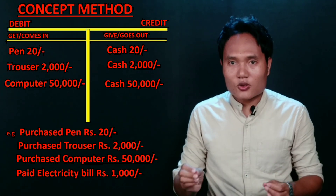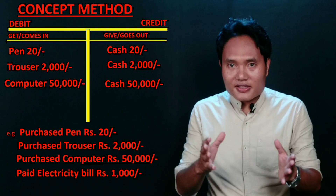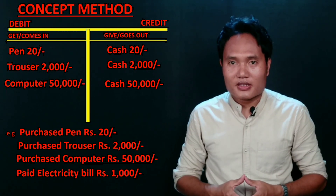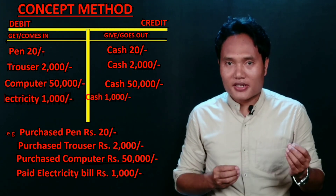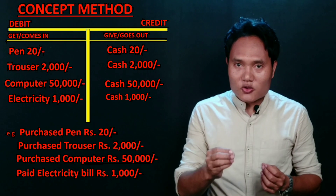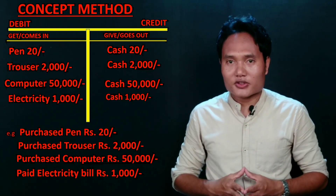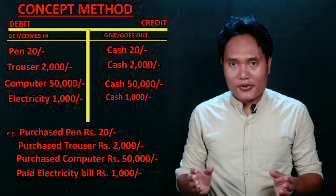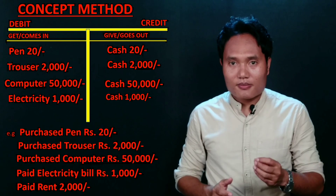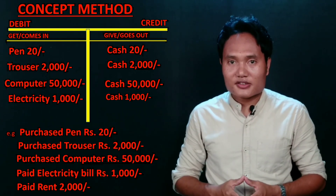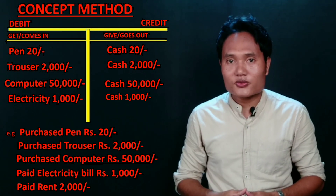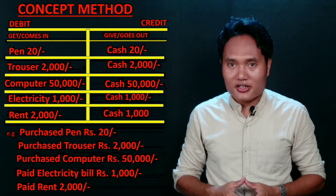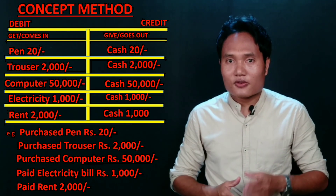Now let us take examples of services — how we use money to use some services. Paid electricity bill costing rupees 1000. In this example, we have not received any thing, but we have used the services of electricity. That's why electricity account will be debited. In return for consuming electricity, we paid cash of rupees 1000, so cash account will be credited. Another example: paid rent rupees 2000. I used rental space, so I pay rupees 2000 to the landlord. Rent account will be debited and cash account will be credited.